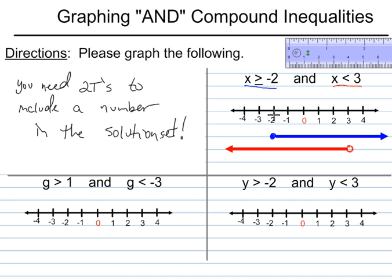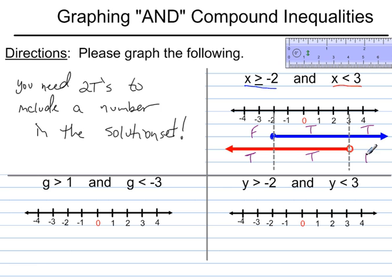Now I need to do some analysis. I'm going to drop down vertical lines at the critical points and label on the blue line whether numbers in each area are true or false. Numbers to the left of negative 2 are false for the blue statement. Numbers between negative 2 and 3 are true for blue, and numbers to the right of 3 are also true for blue. For the red statement, to the left of negative 2 is true, between negative 2 and 3 is true, and to the right of 3 is false. If there's a line graphed in an area, it's true; if it's blank, it's false.